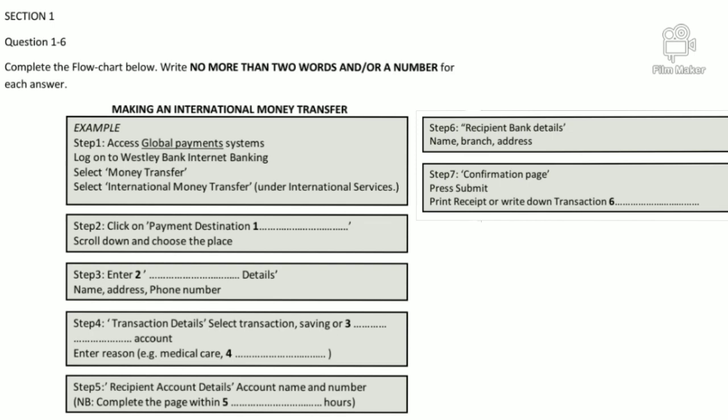Now turn to Section One. Section One: you will hear a telephone conversation between a bank representative and a client who wants to make an international money transfer. First you have some time to look at questions one to six.